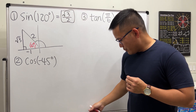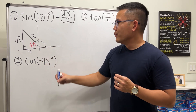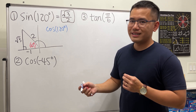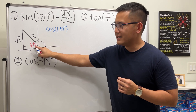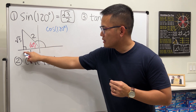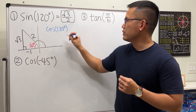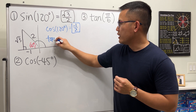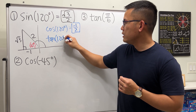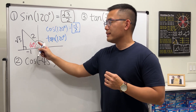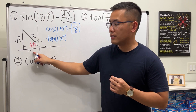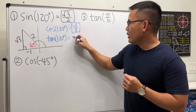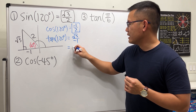Using this same picture we can also do cosine of 120 degrees. Looking at this reference angle, cosine is adjacent over hypotenuse, so it's negative 1 over 2. Let's also do tangent of 120 degrees. Tangent is opposite over adjacent.